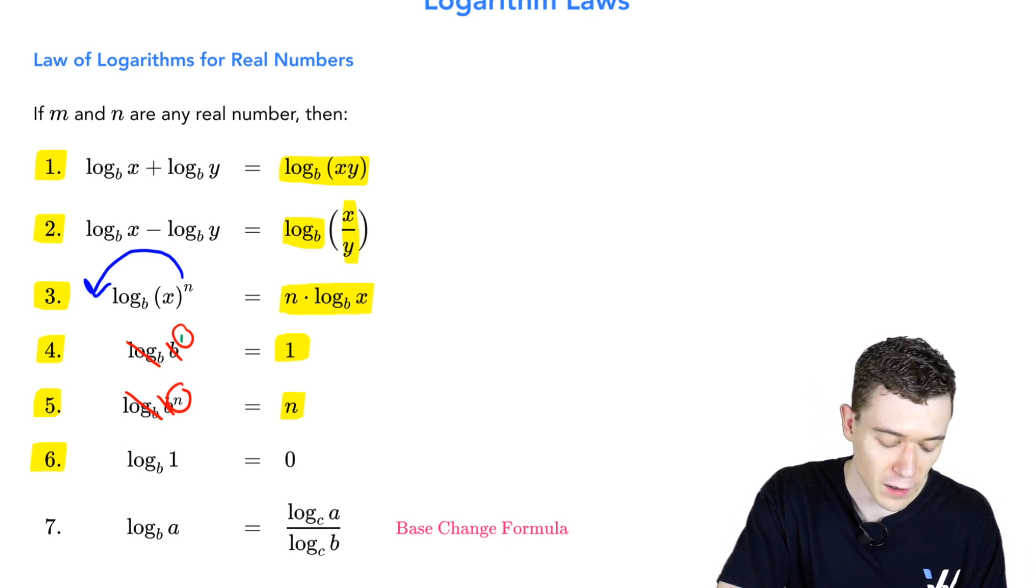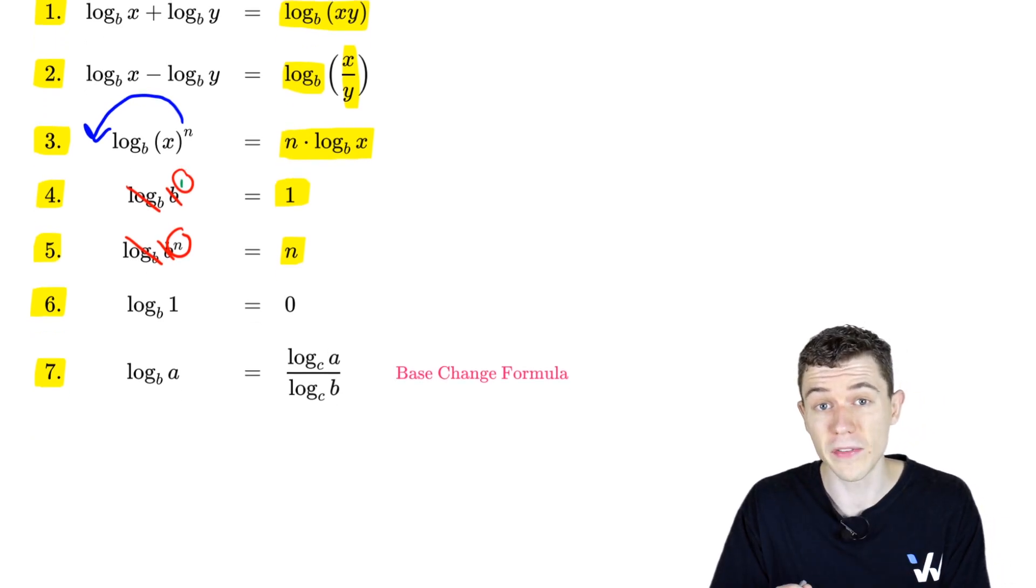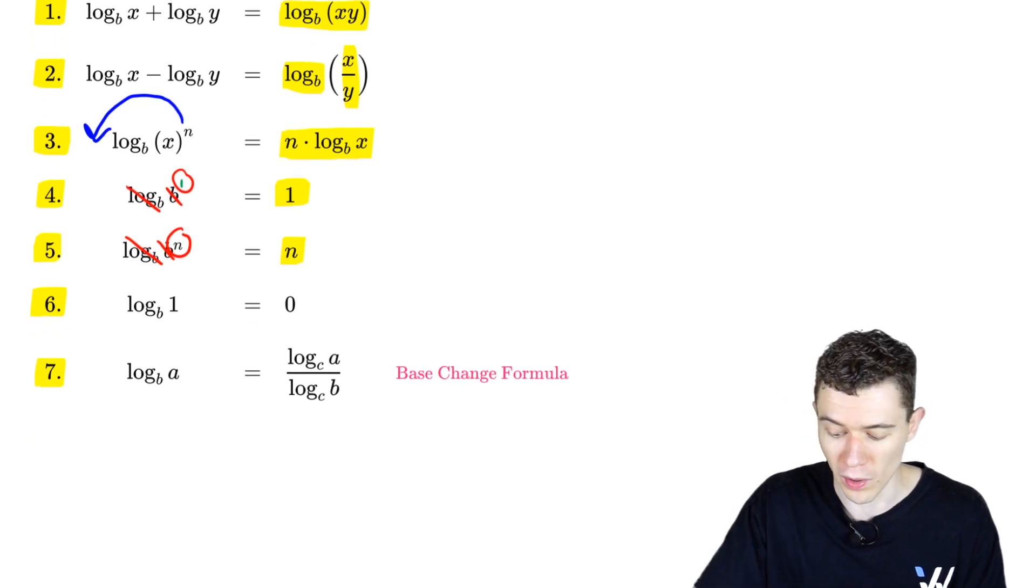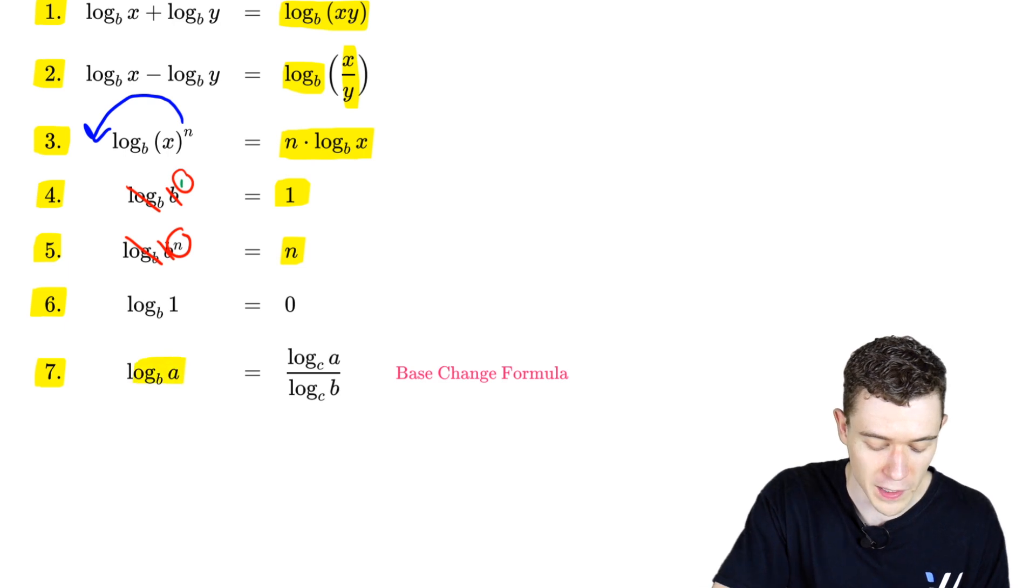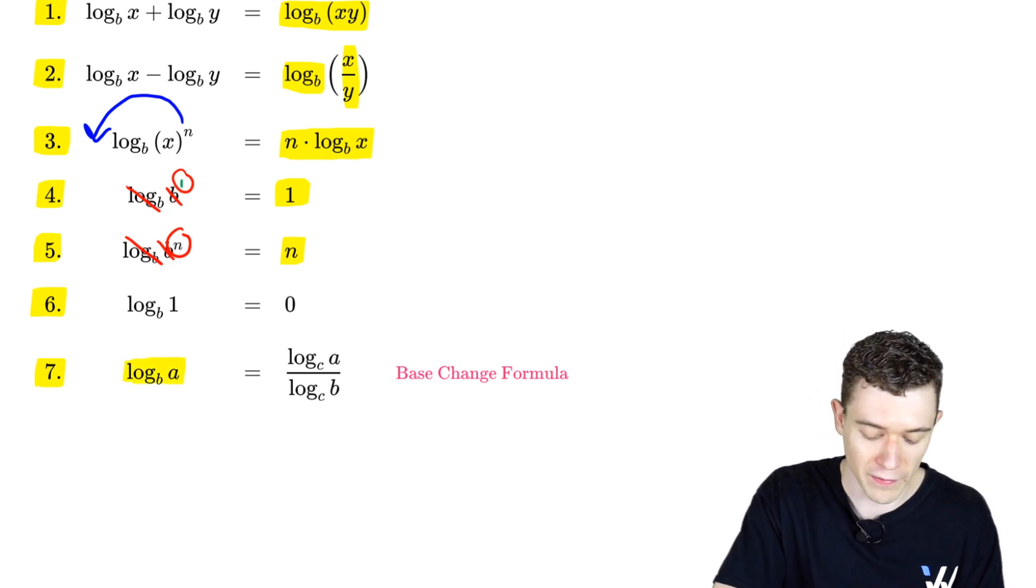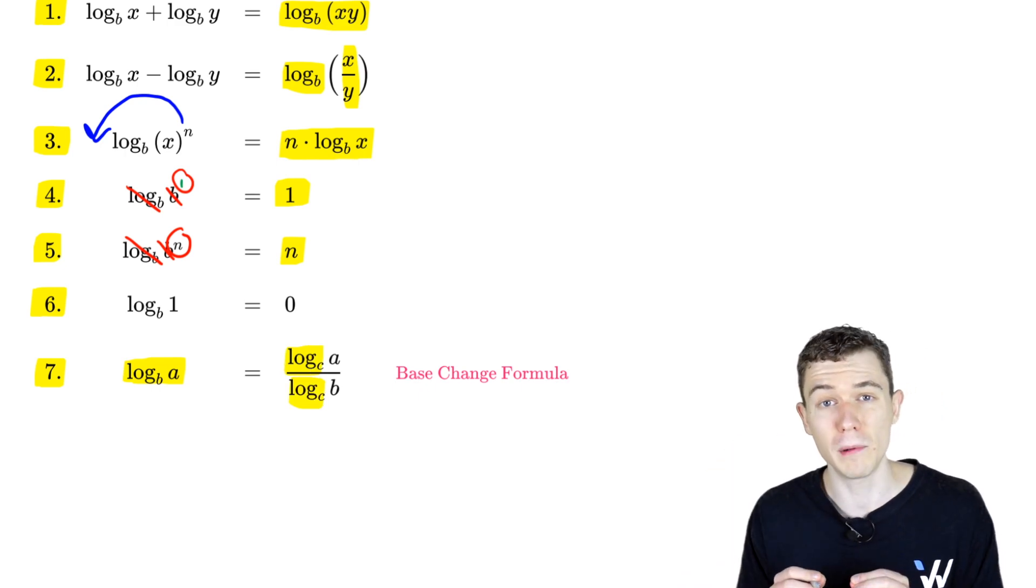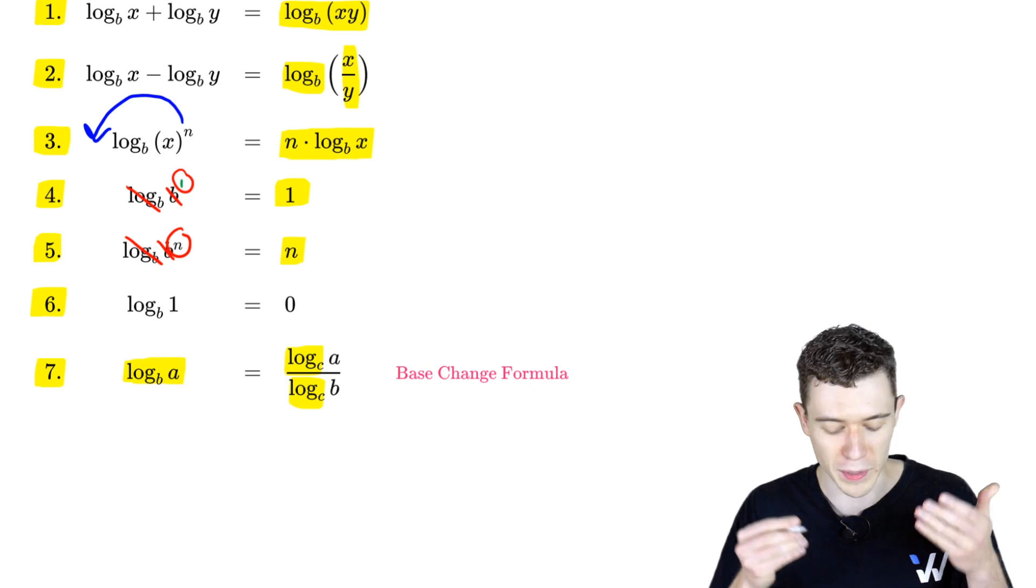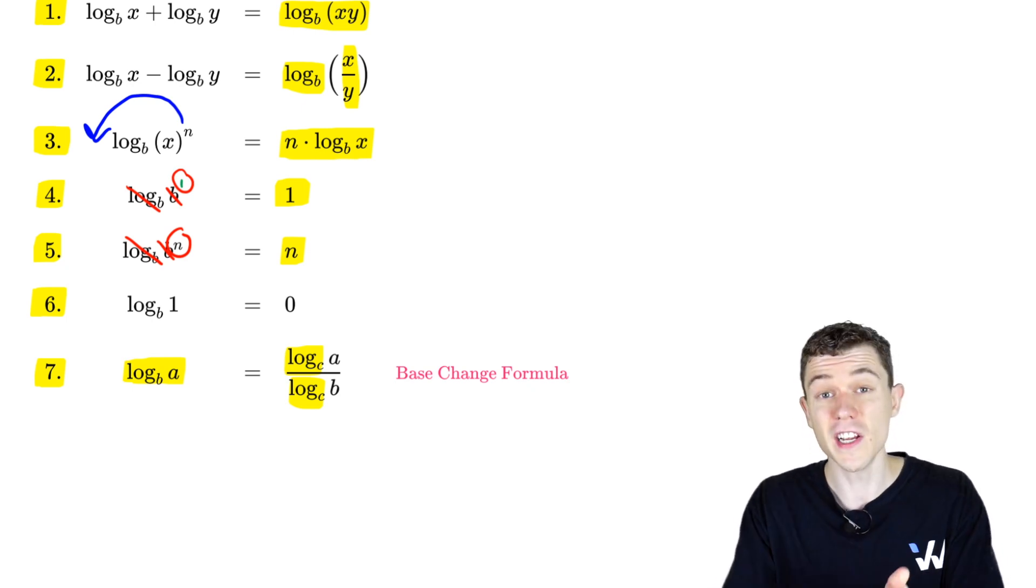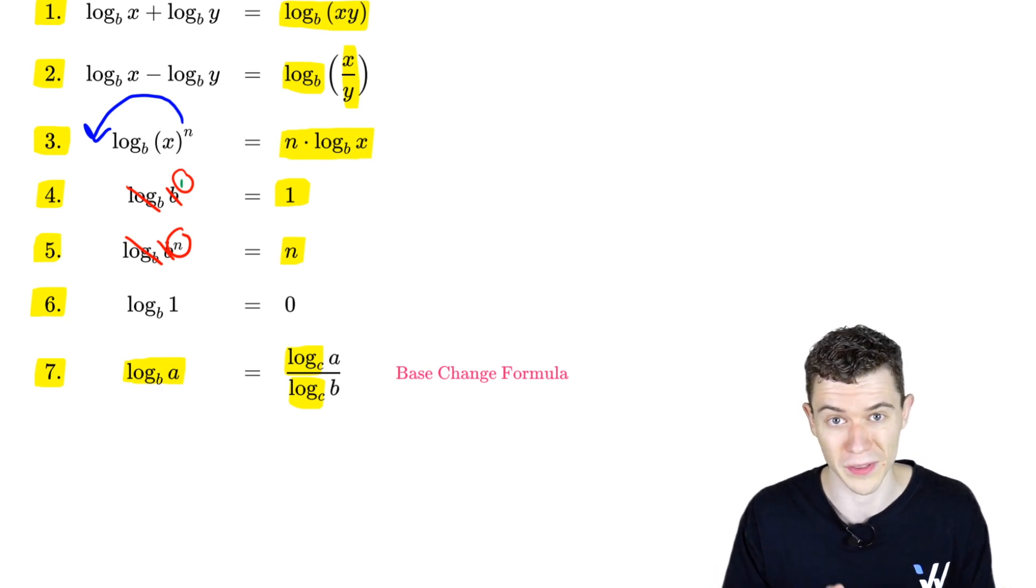And lastly here, we have the so-called change of base formula. We can actually switch the base of a logarithm to any base we want. Say we have log base b of a, and we want to change that to base c. Well, we have the log base c's, and we put the inside a on the top logarithm. We put the old base b in the bottom logarithm. Change of base formula is very nice, because some calculators can't compute every single base out there.